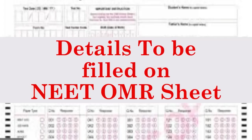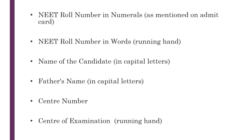The OMR sheet contains details that you need to fill in. For the NEAT OMR sheet, these are: your NEAT roll number in numerals as mentioned in the admit card, your NEAT roll number in words with running handwriting (not in block letters), your name, your father's name, center number, and name of the center. These are the details you need to fill in before you start answering.